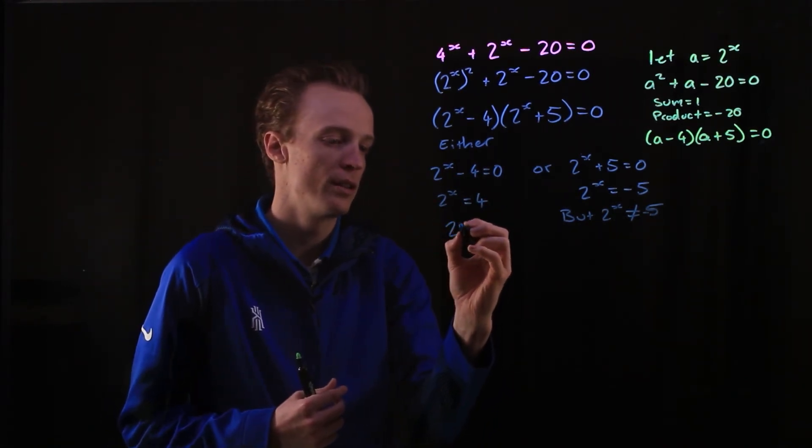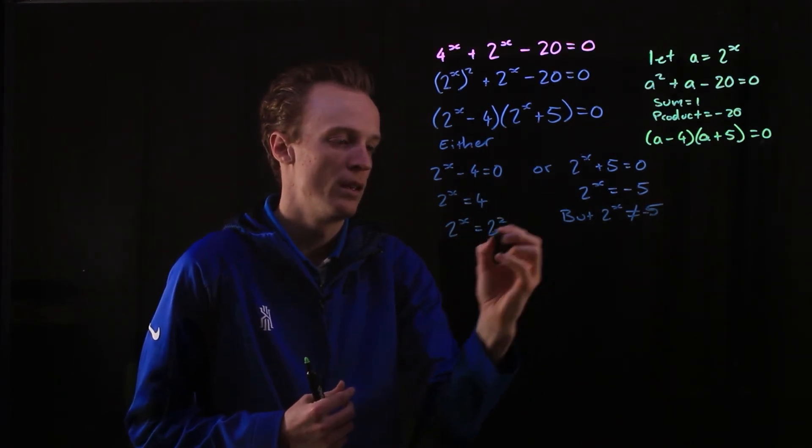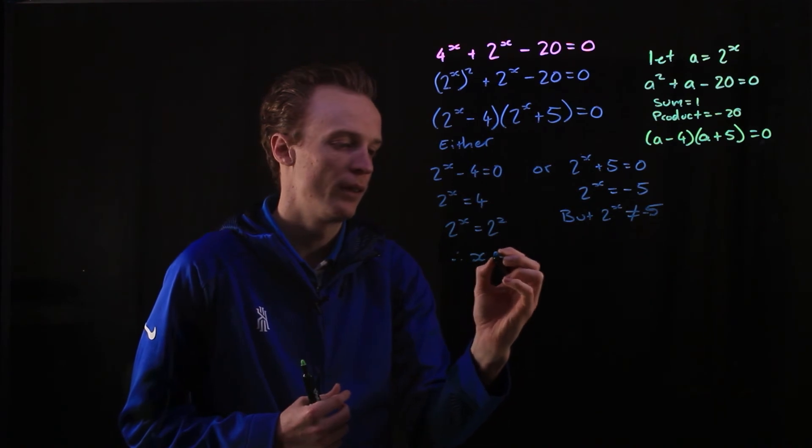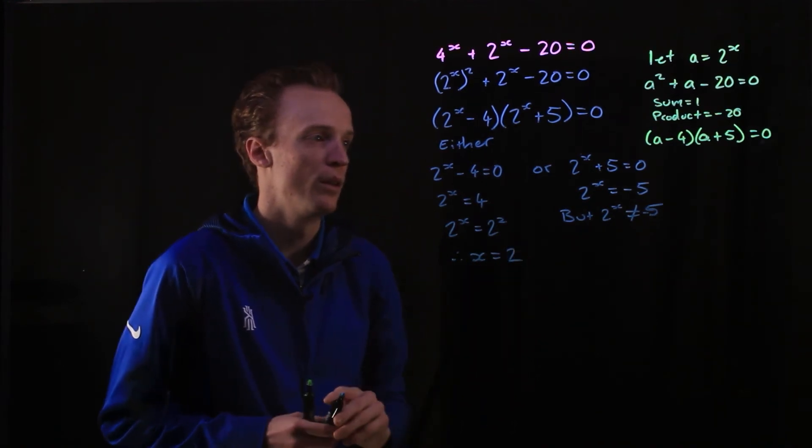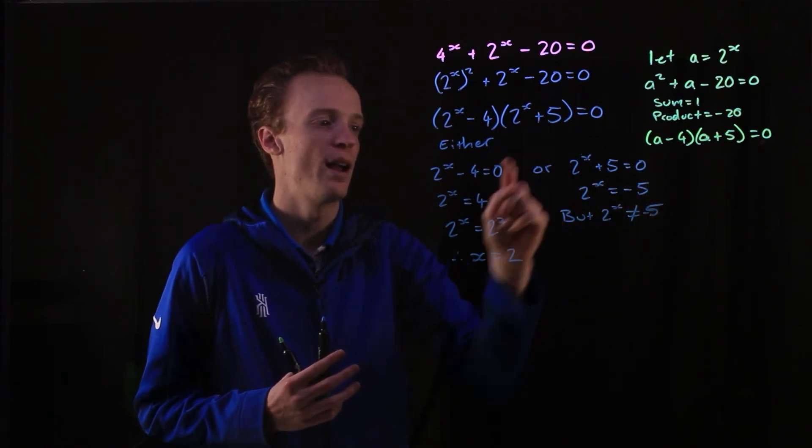So let's look at 2^x, 4 is 2^2. So therefore, my x is equal to positive 2. And there's only one solution here because the other part of it can't actually be solved.